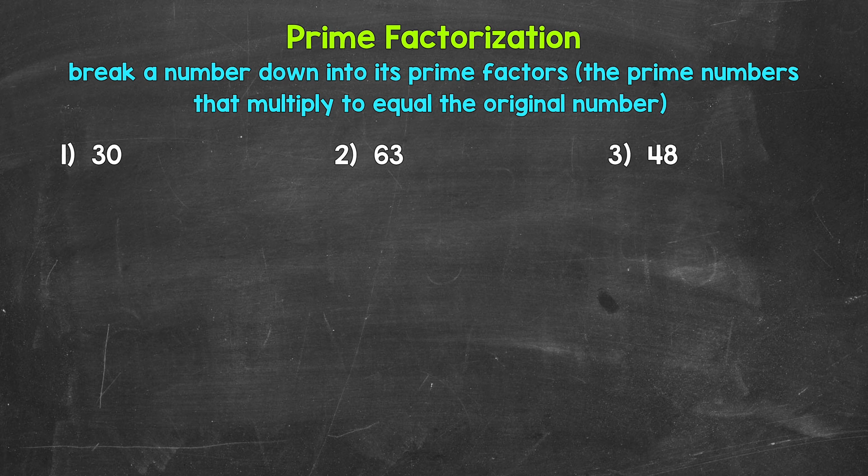For example, 2, 3, 5, 7, and 11 are all prime numbers.